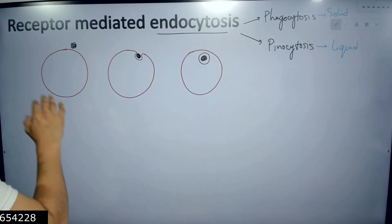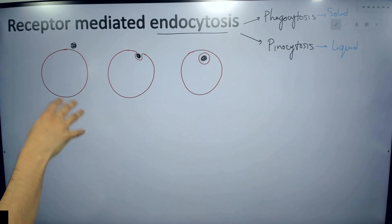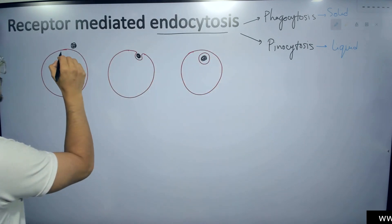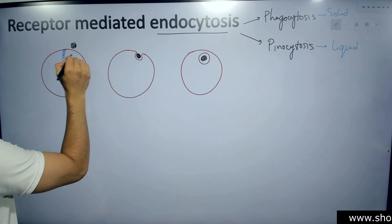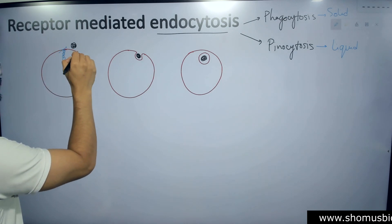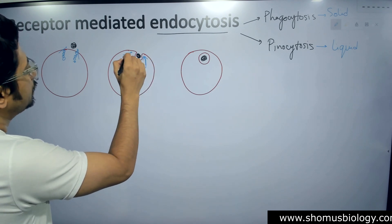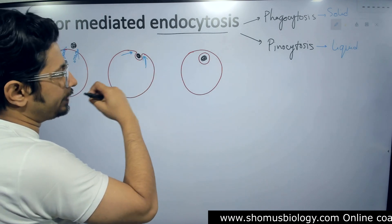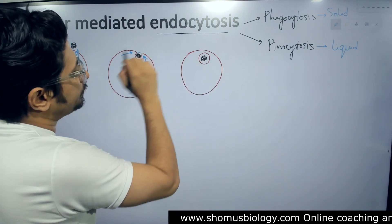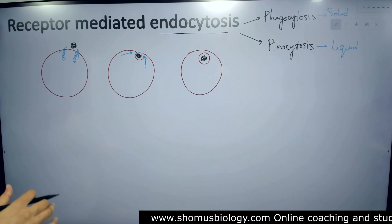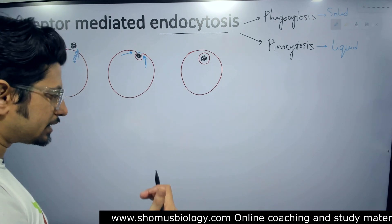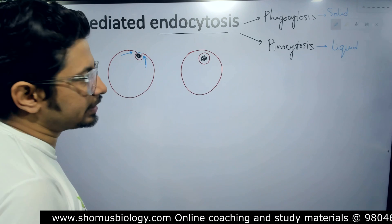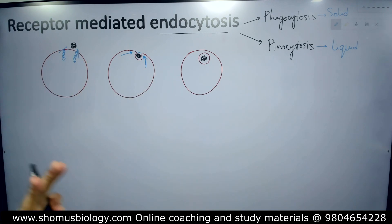Now, what we intend to talk about is the endocytosis mechanism. The cell rearranges its cellular components — cytoskeleton elements like microfilaments and actin filaments — pushing from both sides to create a cleft or a vesicular cleft. Once the cleft is formed, the membrane fuses and the vesicle takes up the particle inside, whether the particle is solid or liquid. That is the general idea of endocytosis.